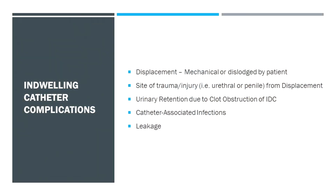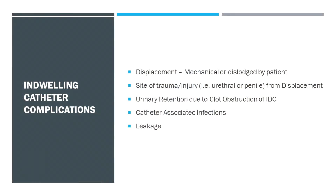In terms of indwelling catheter complications, these can be displaced. If they're displaced, we need to know: was it mechanical failure — it got caught on something and pulled out — or was it dislodged by the patient, either by accident or deliberately? Usually if it's dislodged with the balloon still inflated, you're likely to get some trauma or injury. We're not documenting this well, but it will add a lot of complexity. Simply writing that it was dislodged by a patient accidentally, causing urethral trauma with haematuria, would be excellent in terms of codability.